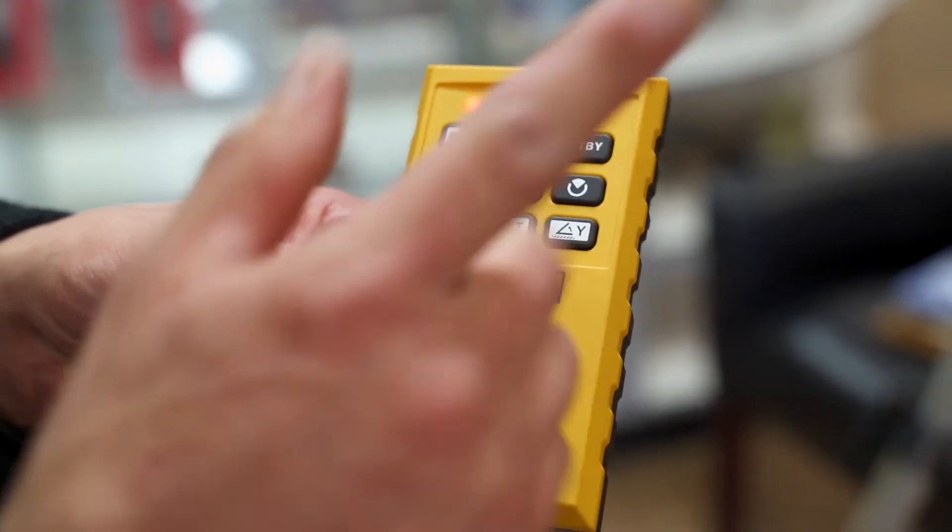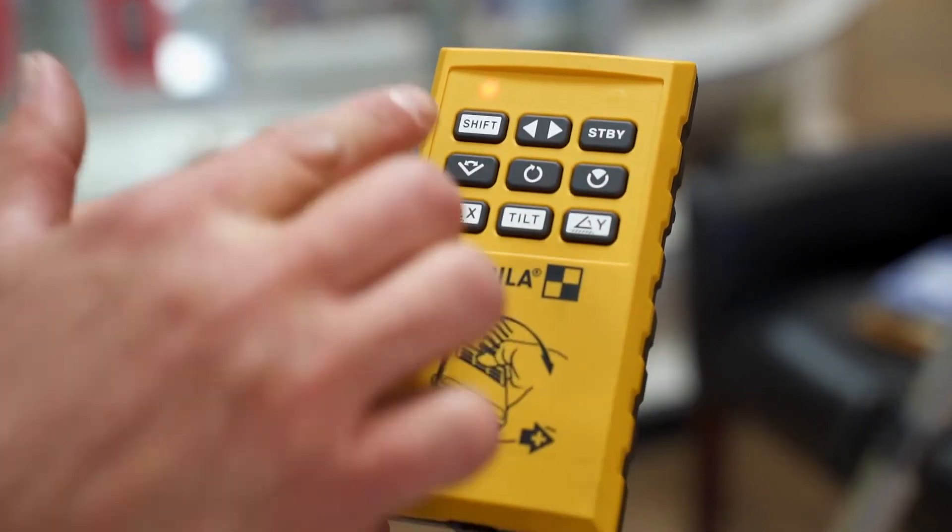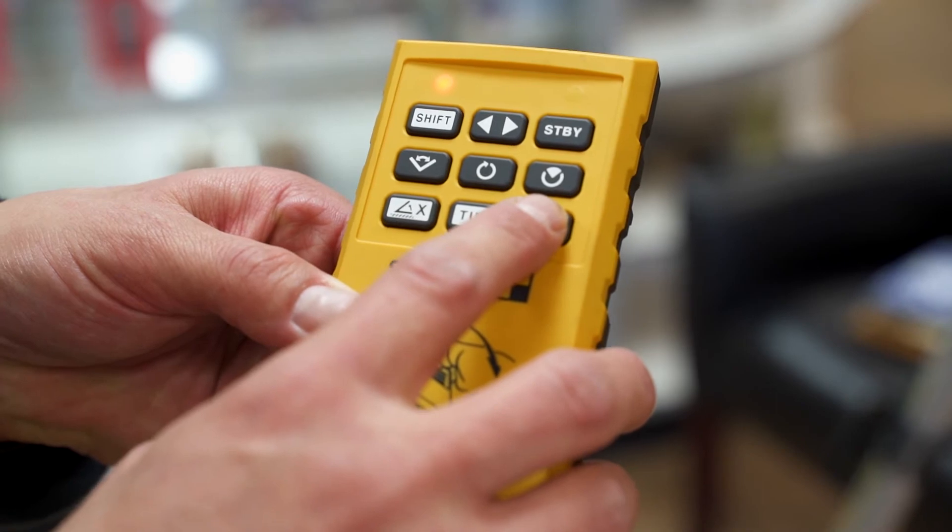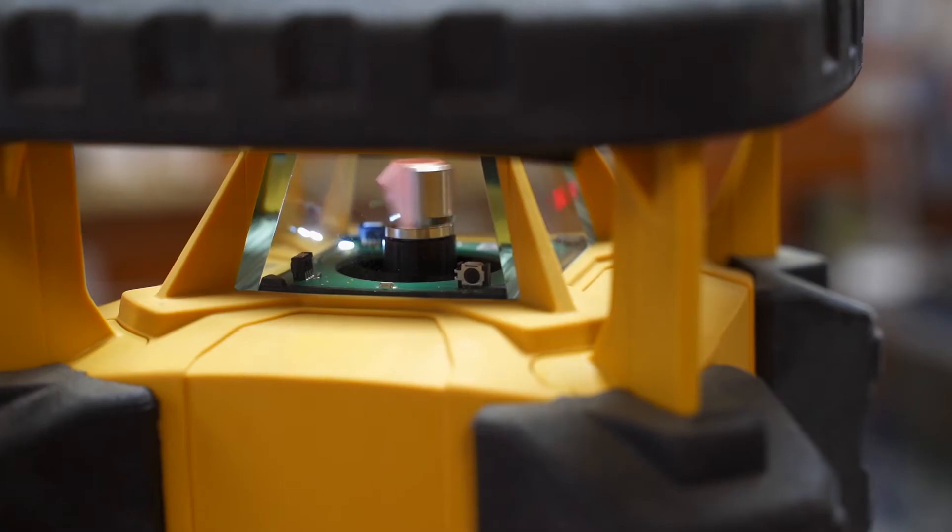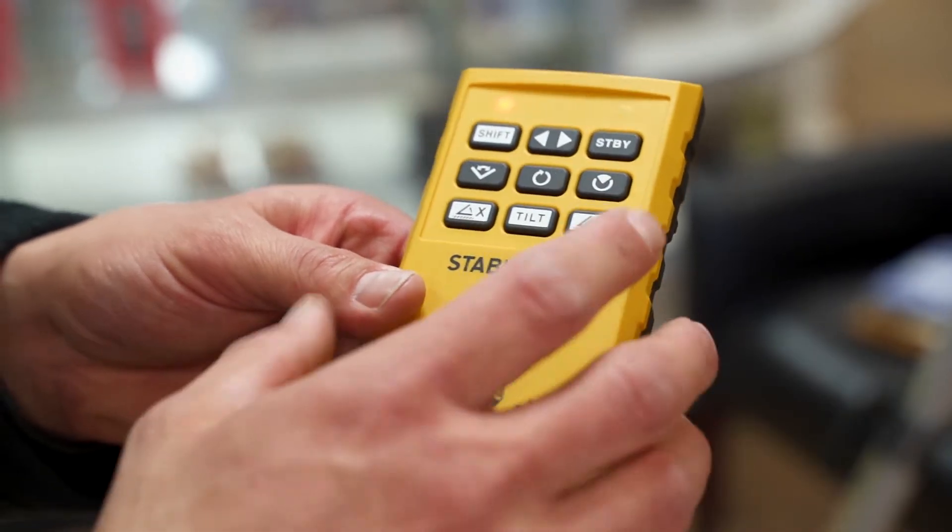Now, if I want to engage Y, all I would do is, as long as my shift button is still illuminated, I know that I'm able to be engaged. I would then press the Y button once. A green light is going to populate on the top of the laser to let you know that you're engaged in Y axis.